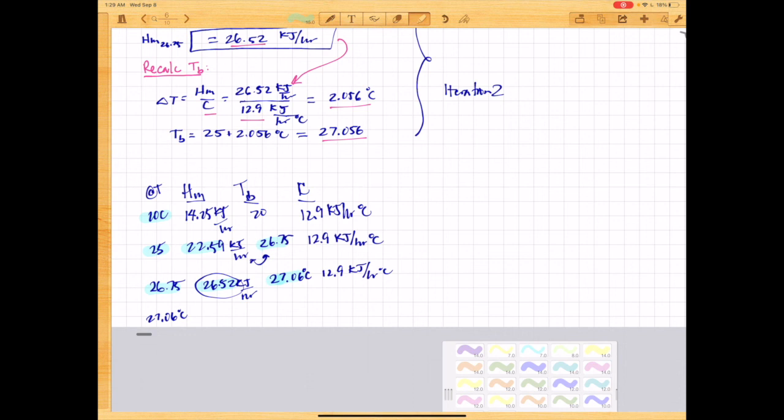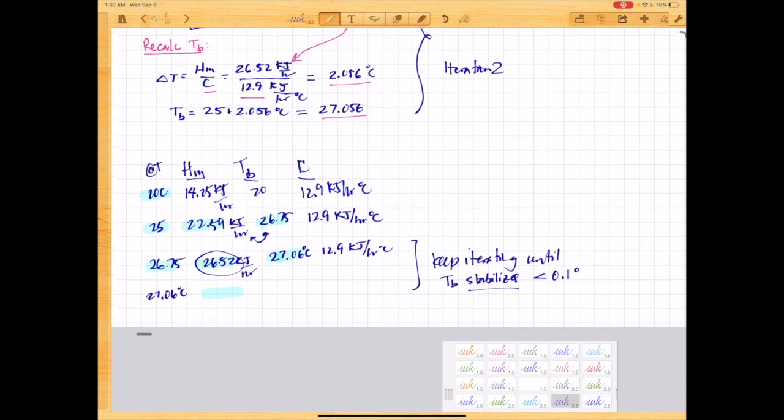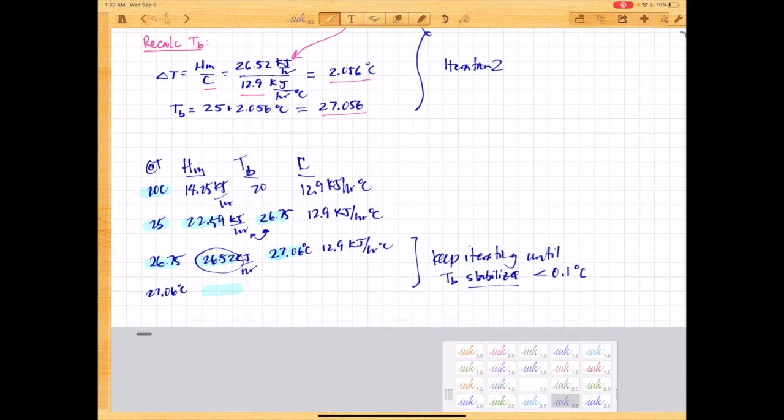You would then calculate with the new heat of metabolism here, and you want to keep iterating until the body temperature stabilizes. And for our purposes, we're going to say less than 0.1 degrees Celsius change from one iteration to the next. And when we reach this point, we'll say that this is in heat balance. So I mean, our calculations are pretty rough. So I think if we can get it within that, then any changes, given all the assumptions, this is a fairly small change that could probably easily balance there.